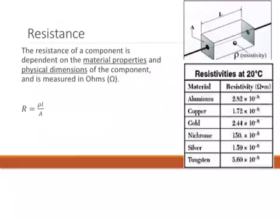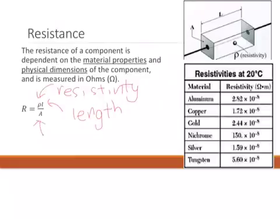R is equal to rho L over A, where rho stands for the resistivity of the material, L stands for the length, and A stands for the cross sectional area.